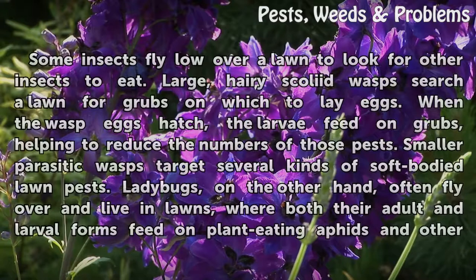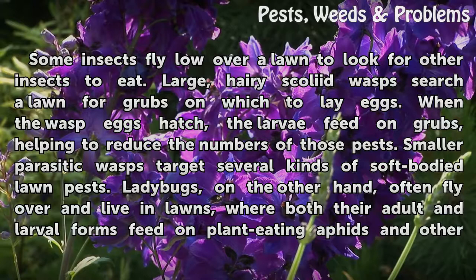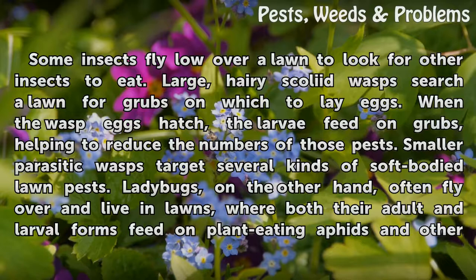Some insects fly low over a lawn to look for other insects to eat. Large, hairy scolied wasps search a lawn for grubs on which to lay eggs. When the wasp eggs hatch, the larvae feed on grubs, helping to reduce the numbers of those pests.